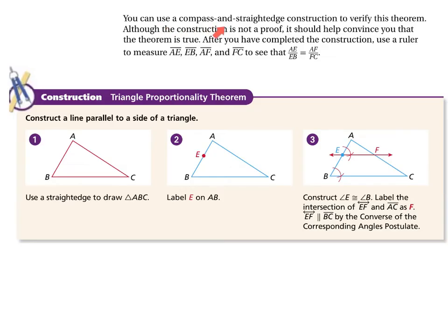You can use a compass and straight edge construction to verify this theorem. Although the construction is not a proof, it should help convince you that the theorem is true. After you have completed the construction, use a ruler and you can see that the sides are proportional.